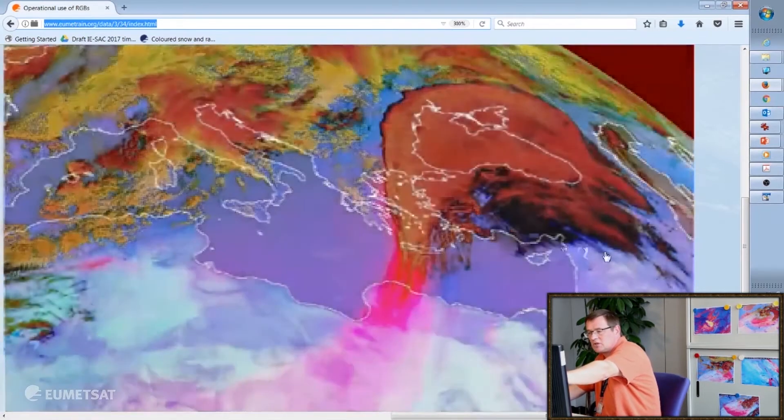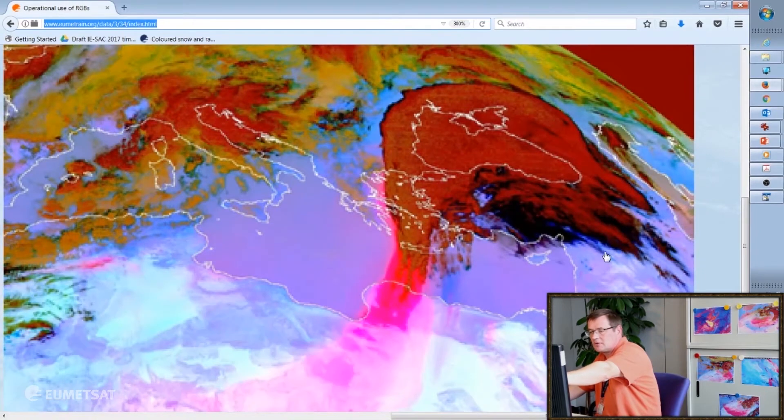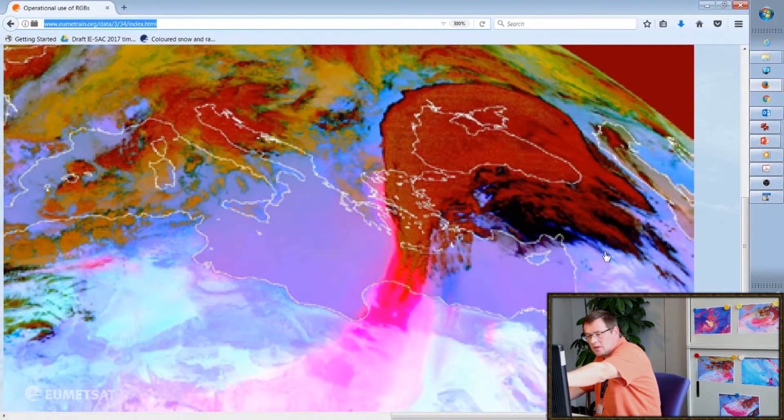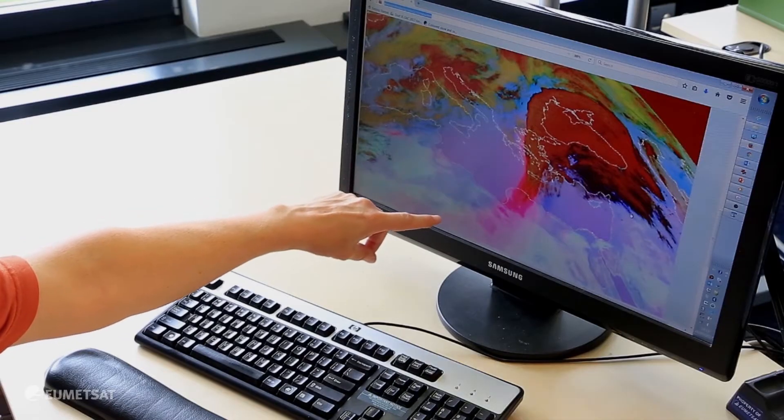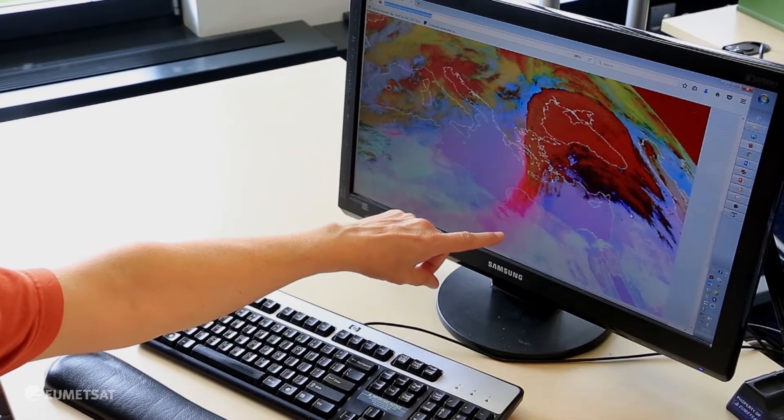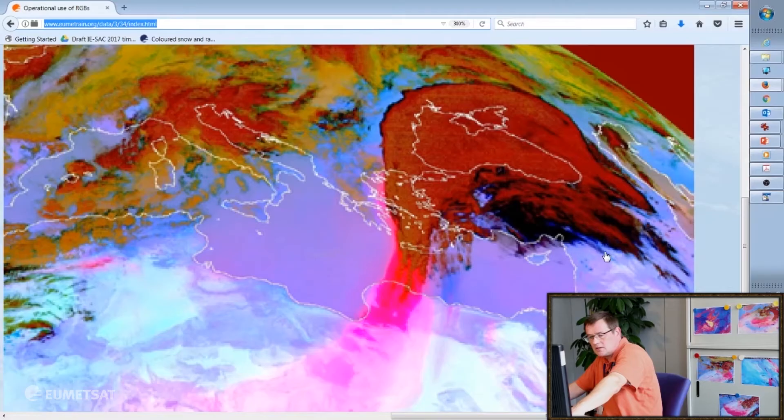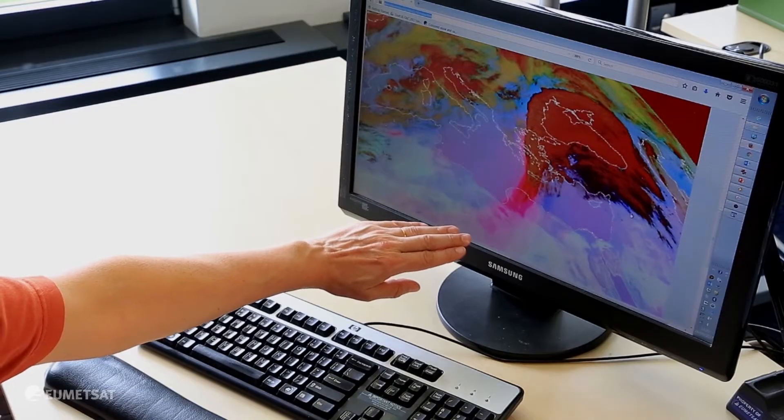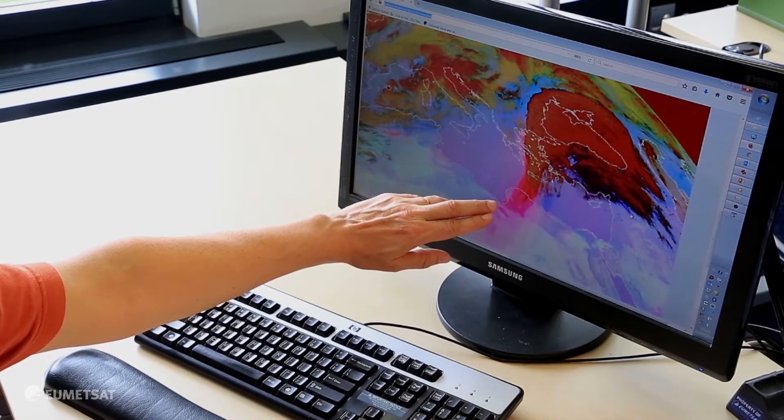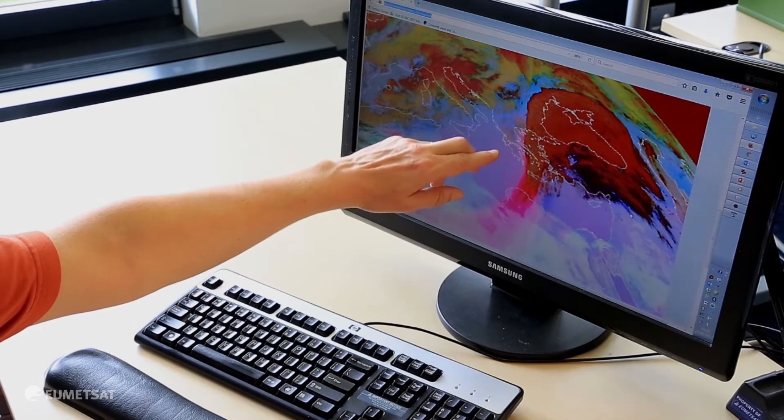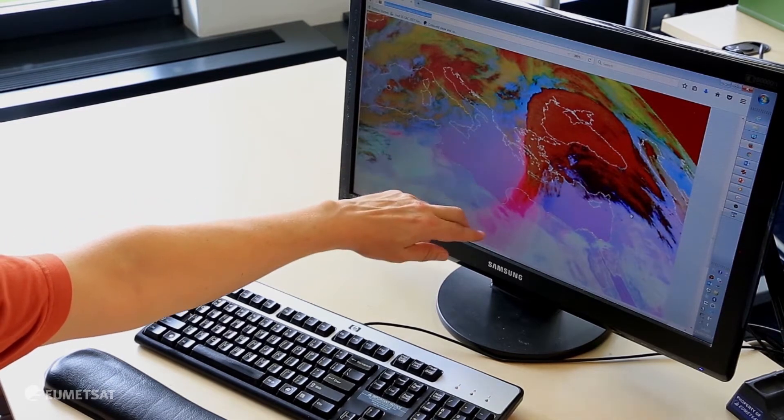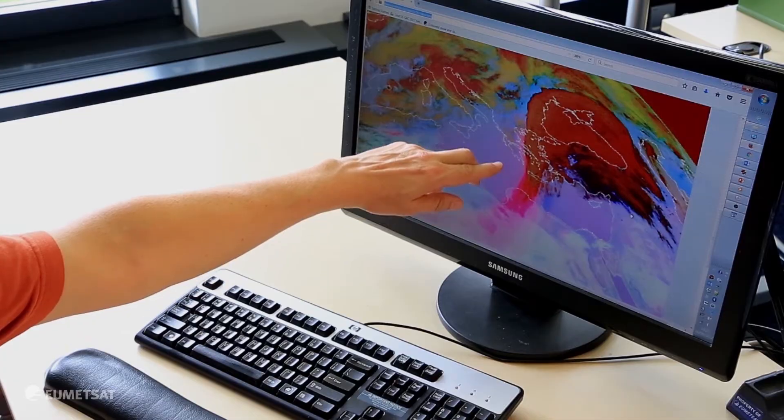But immediately when you switch on the dust RGB product you can see that now we can pick up the dusty areas easily just by following where we see the magenta colors. You see that the dust is being lifted up over the Sahara desert and then brought into the circulation by the increased winds of the cold front and you see how it extends across the whole Mediterranean.